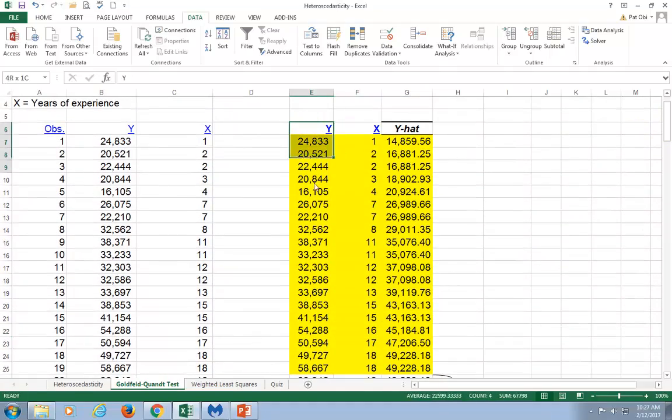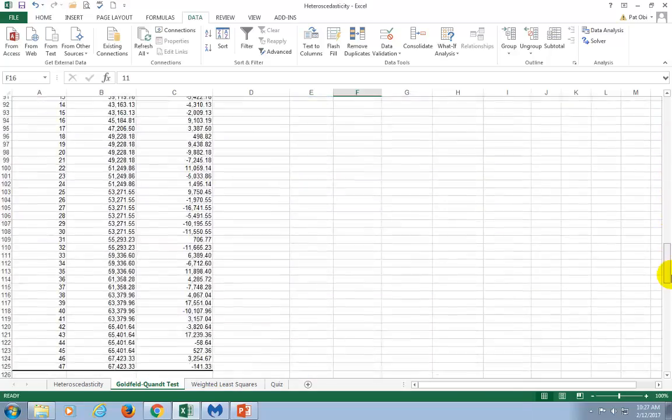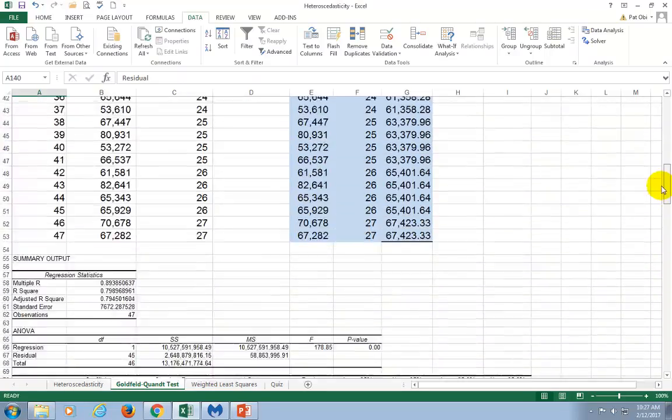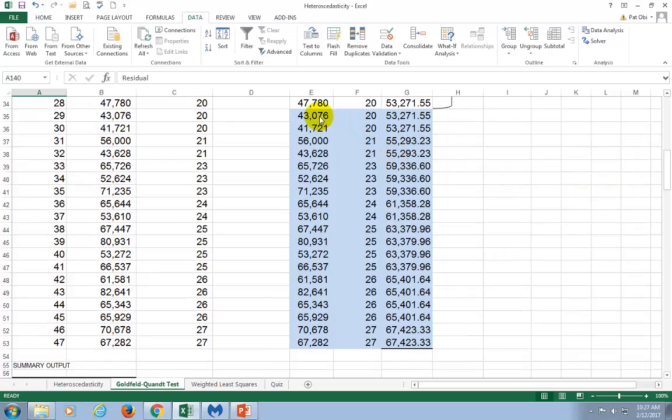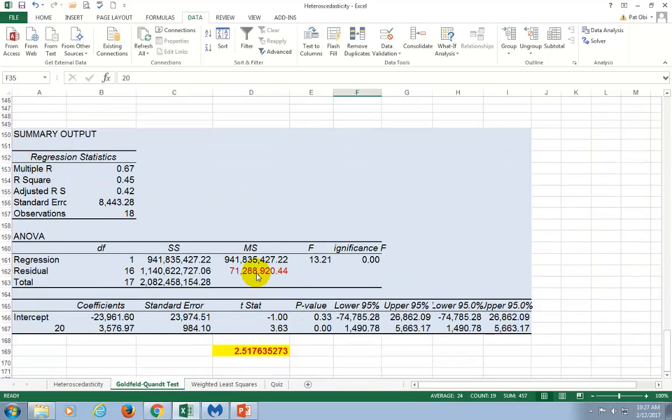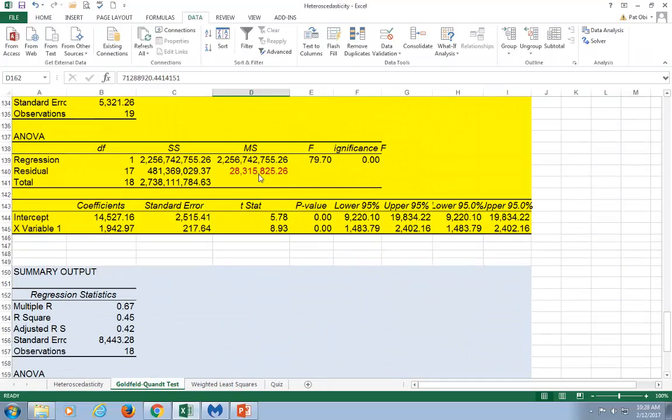So, when I run the regression, when I regress Y on X, I go down here, this is my output. And I make a note of the mean square error. And then I do the same for the sky blue data set, regressing this Y on X. And this is my output right here. And I make note of the mean square error.